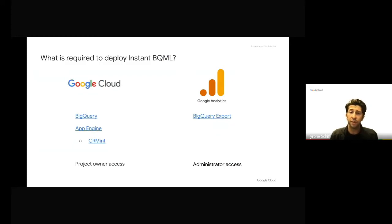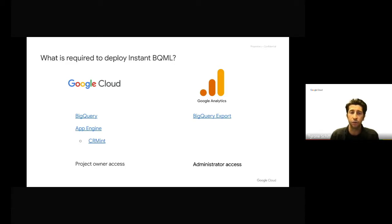To deploy the Instant BQML solution, start exporting your Google Analytics data to BigQuery. Find the users with the right permissions to Google Analytics and Google Cloud and follow the instructions on the Instant BQML form from top to bottom. You'll be up and running in no time. Instant BQML could be a great way for you to get started with marketing analytics on Google Cloud to help you achieve more optimal marketing performance.